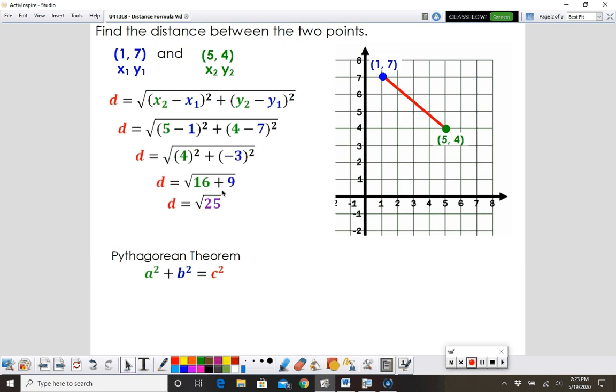We're going to end up with the distance being the square root of 25, which of course is positive or negative 5. Since we're just talking distance, it's just a positive 5.